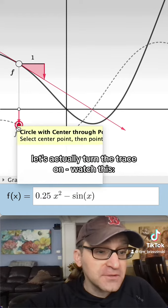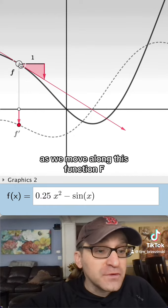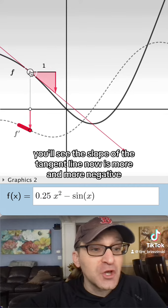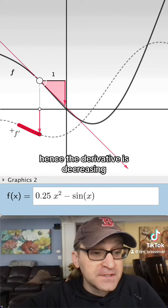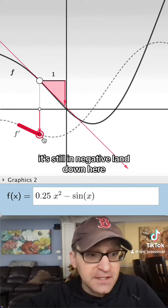Let's actually turn the trace on. Watch this. As we move along this function f, you'll see the slope of the tangent line now is more and more negative. Hence, the derivative is decreasing. It's still in negative land down here.